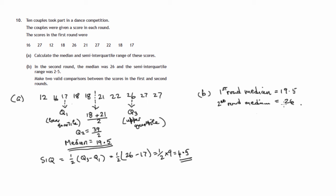So since the median is a measure of the average, what we can definitely say is that in the second round, the average score has increased. The reason for that is that we're saying 26 is greater than 19.5.